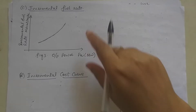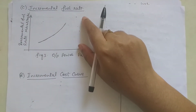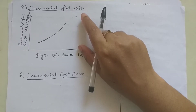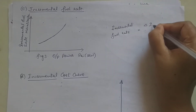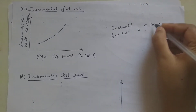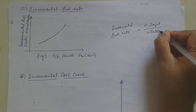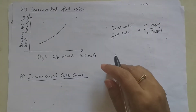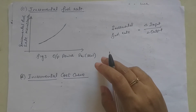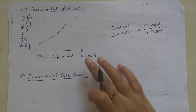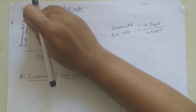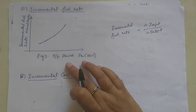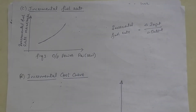The next topic is incremental fuel rate. The incremental fuel rate is equal to the small change in input divided by the corresponding change in output. The unit is rupees per hour. The plot of incremental fuel rate in m kilocalorie per megawatt hour versus output power PGi in megawatt is shown in the figure.